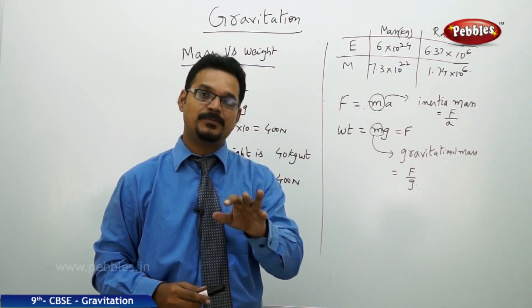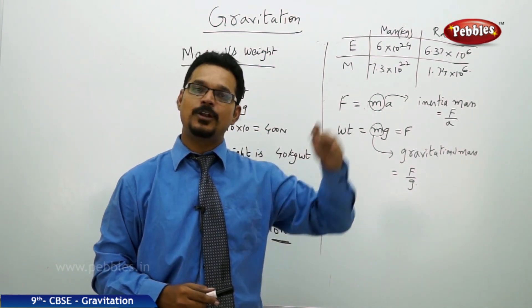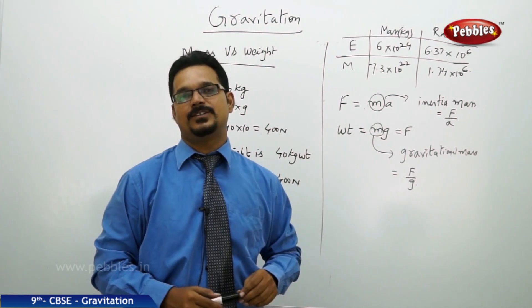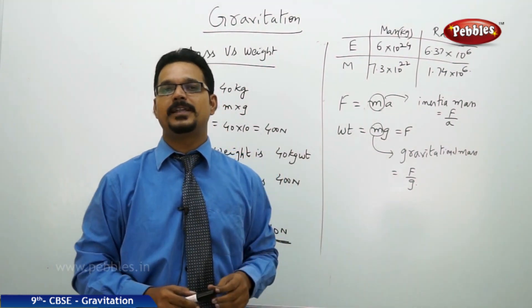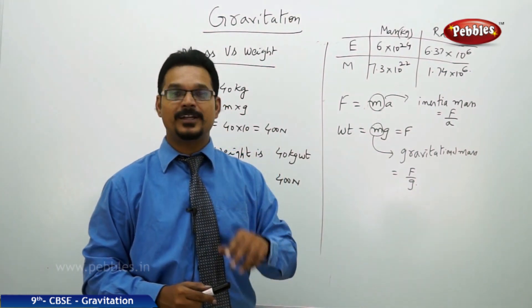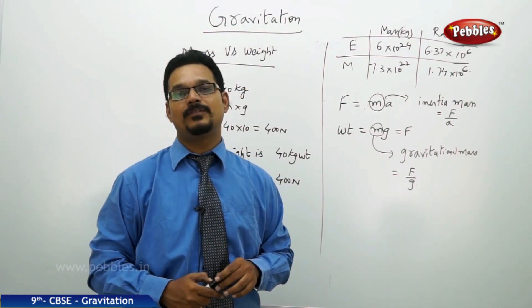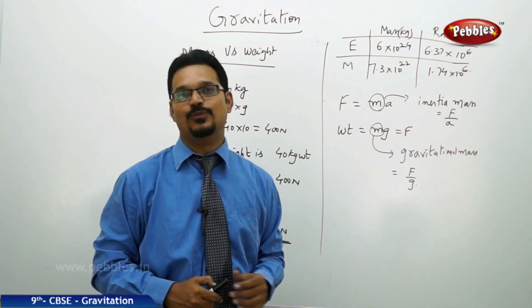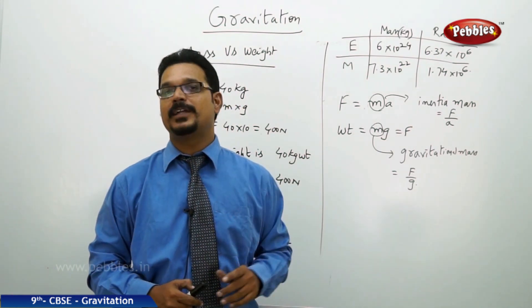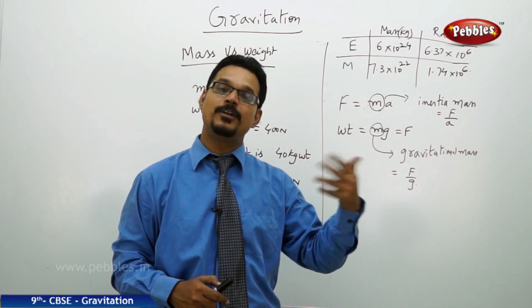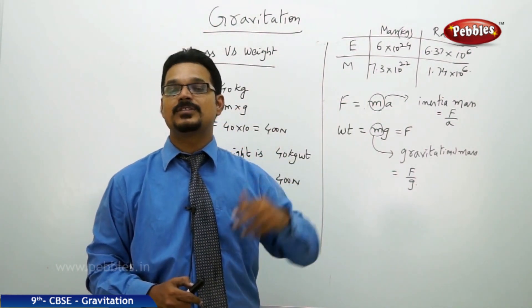This g depends upon the planet. Planet to planet, g value changes. If you go to Mars planet, then g is not 9.81. If you go to Mercury, g is not 9.81. If you go to any satellite like our moon, g is not 9.81. So g value changes from planet to planet and star to star.